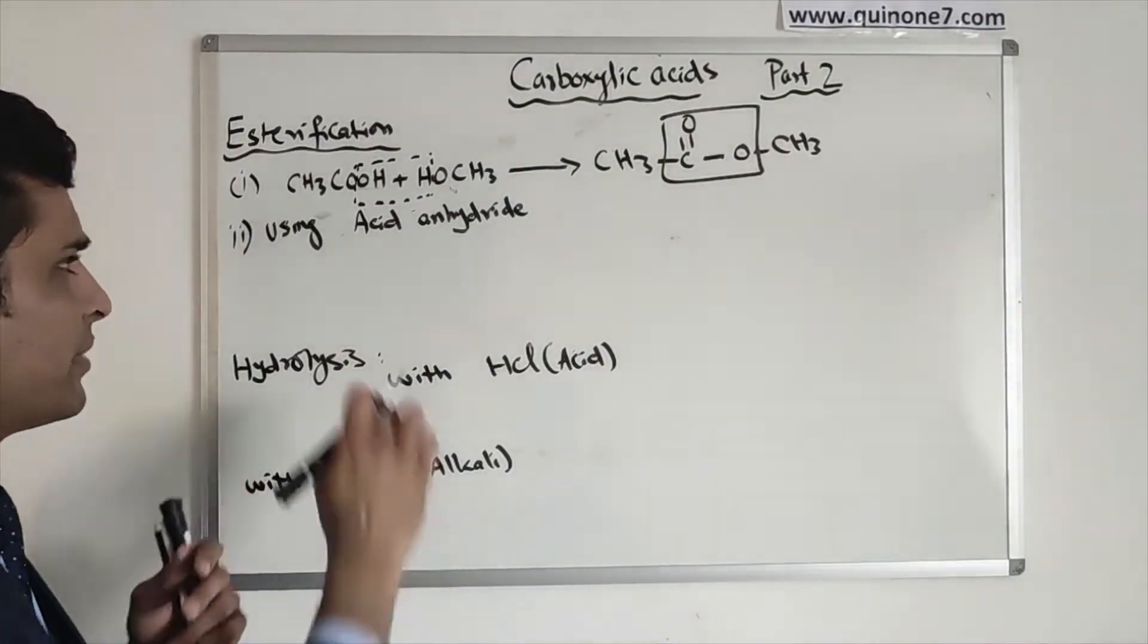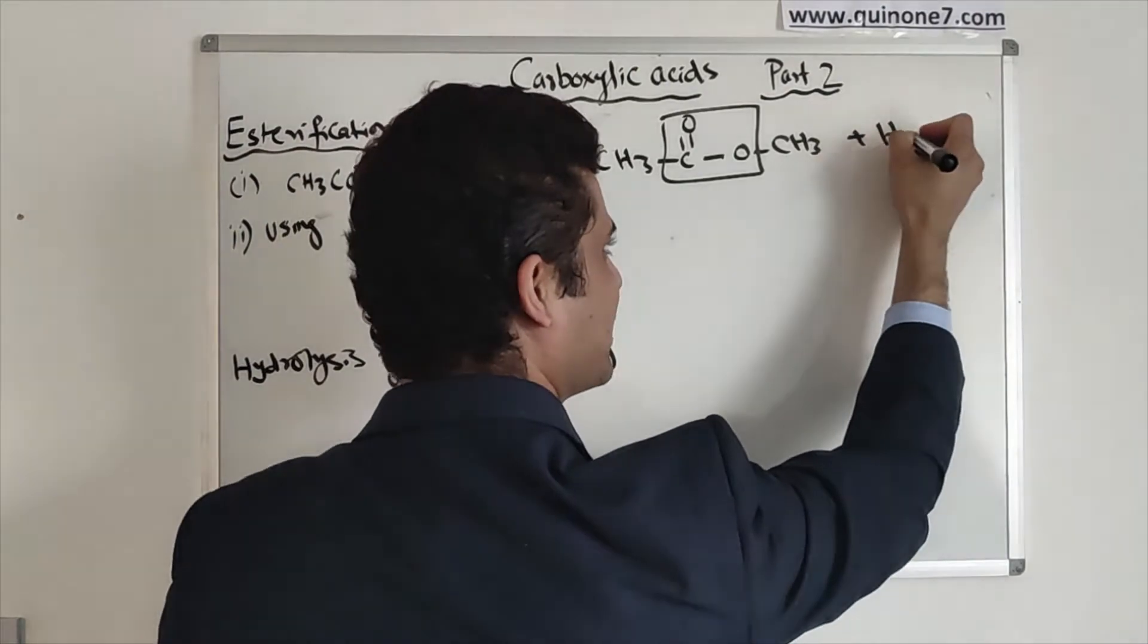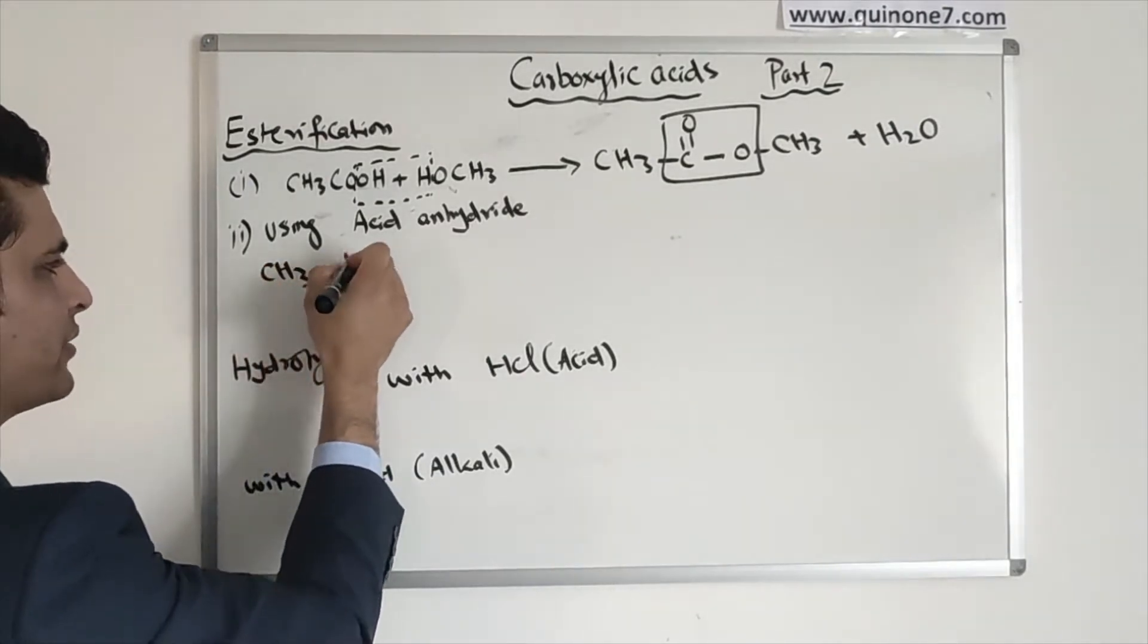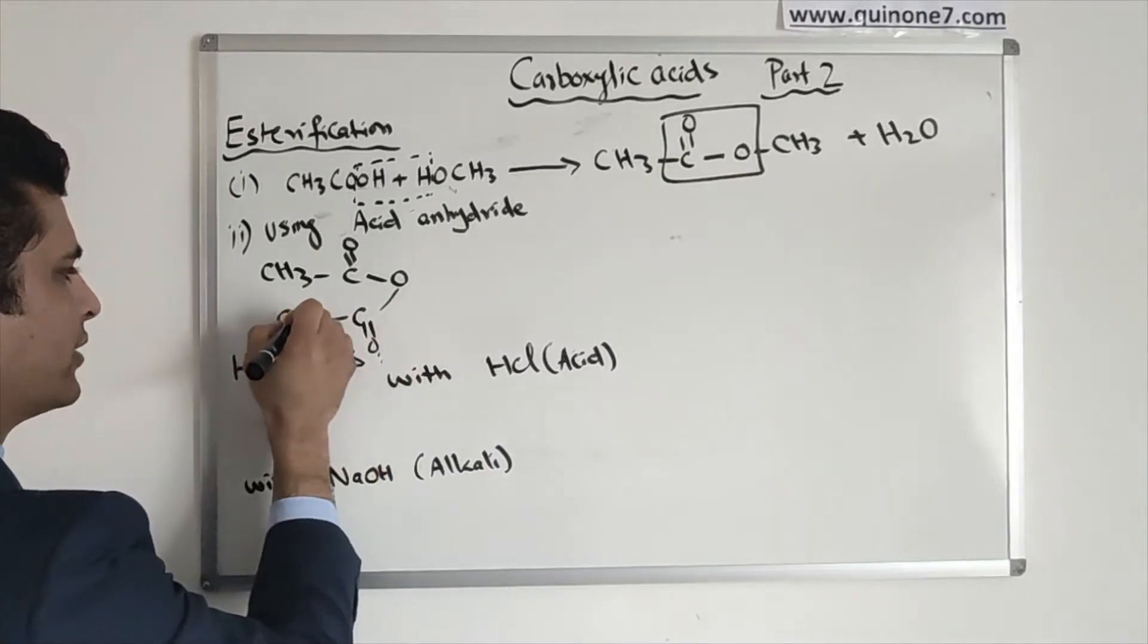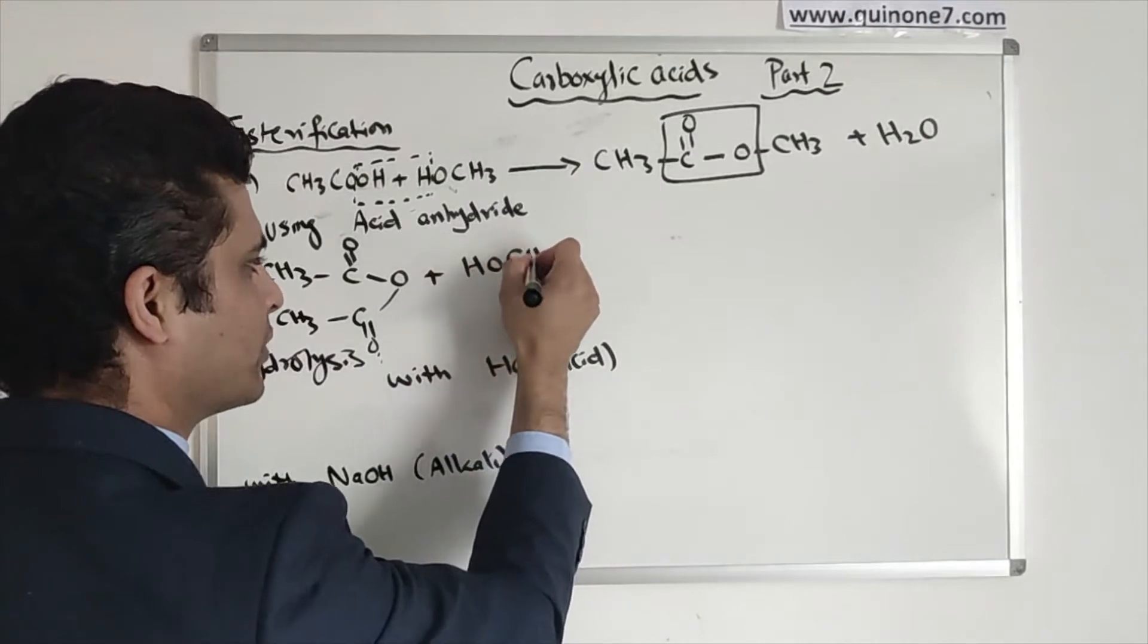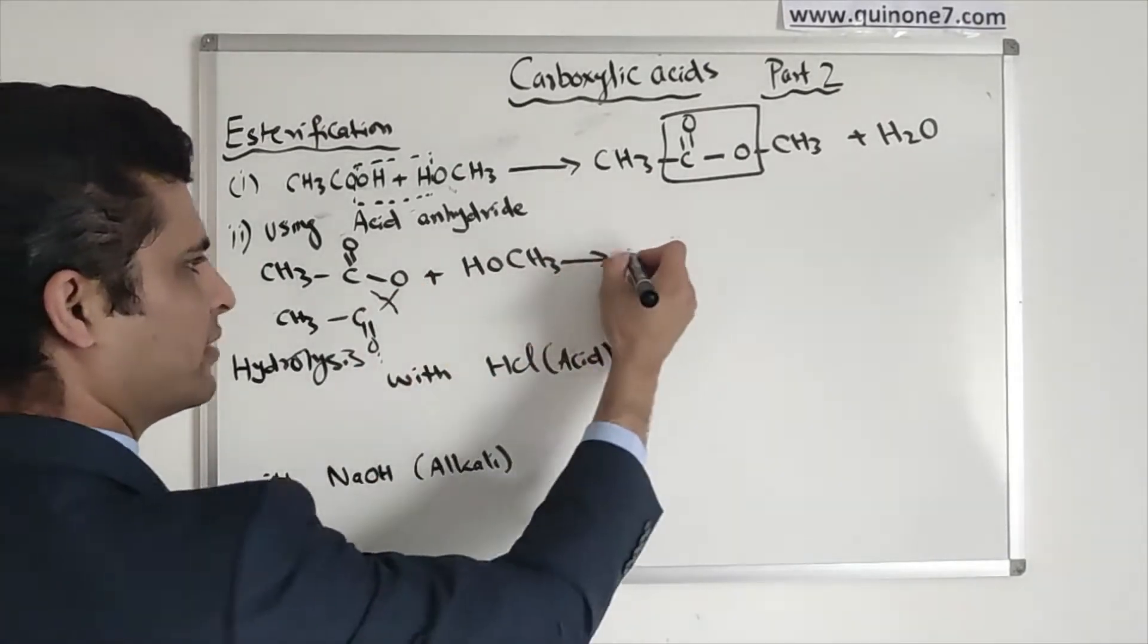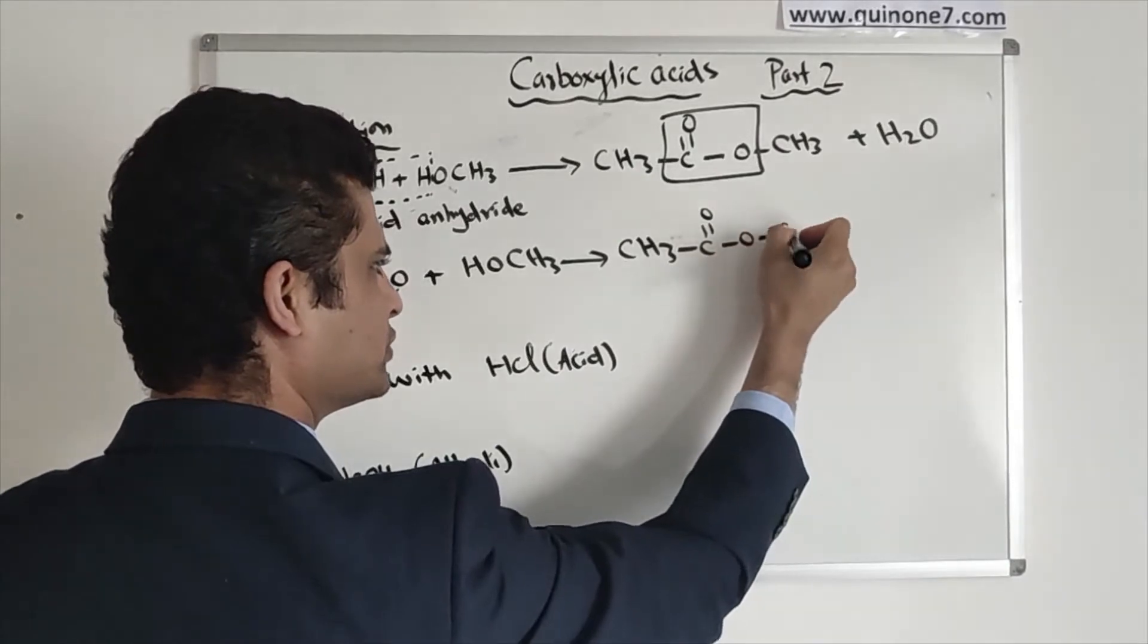We can also make an ester by reacting it with acid anhydride. This is the example of acid anhydride. When you react it with an alcohol, you will get an ester. If you break the bond from there, you will get CH3 C double bond O CH3.